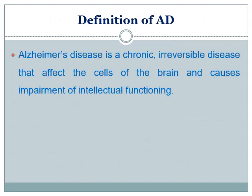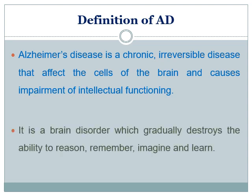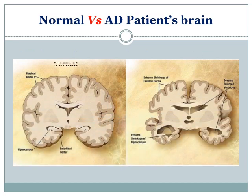Alzheimer's is a CNS or brain disorder that gradually and progressively destroys the ability to listen, to remember, to imagine, to think, or to learn. In this picture we can clearly see the difference between the normal brain and the Alzheimer's brain. In Alzheimer's disease, the cerebral cortex is extremely shrunken, the hippocampus is also highly shrunken, and the ventricles are severely enlarged compared to the normal brain.